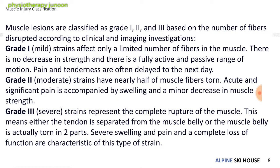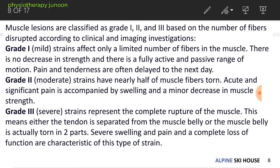In Grade 2, the moderate stage, strain involves nearly half of the muscle fibers torn. Acute and significant pain is accompanied by swelling and a minor decrease in muscle strength — unlike Grade 1 where there is no strength decrease. There is some decrease in both active and passive range of motion, especially active range of motion.